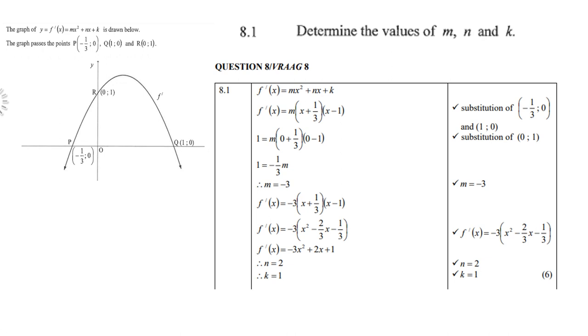Let's look at 8.1. Determine the values of m, n, and k. That is part of the quadratic equation which is the derivative. If the two x-intercepts are given, we use the method m equals, or you can say a or m, times x plus one-third (the opposite of minus one-third) and x minus one (the opposite of plus one). Once you've done that, then you substitute point R into the equation, x equals zero and y equals one, to find the value of m.